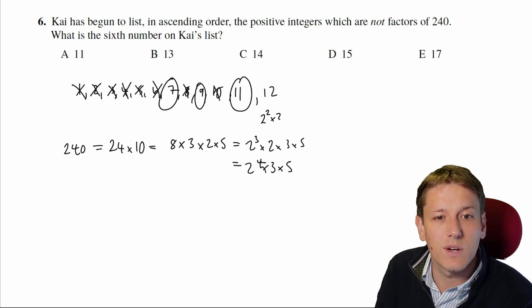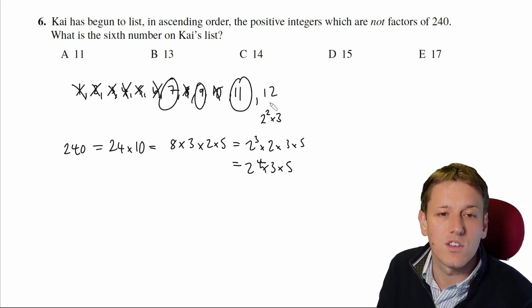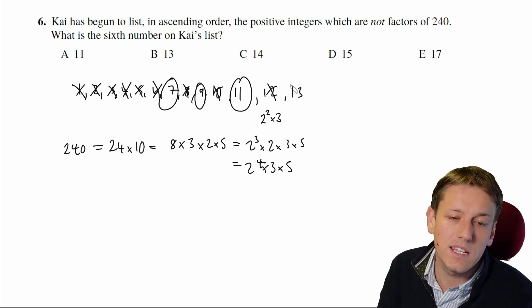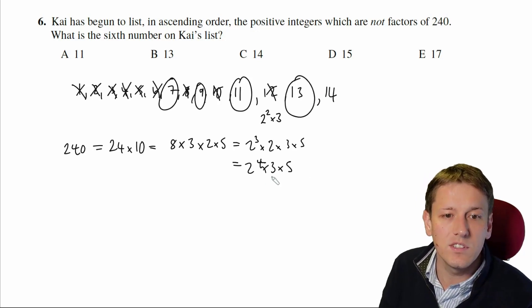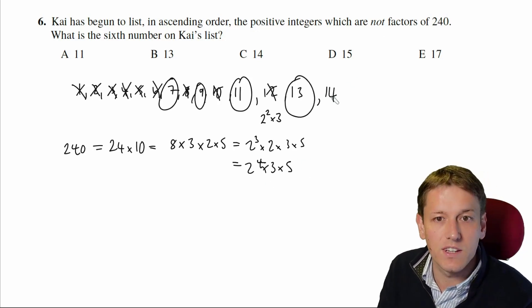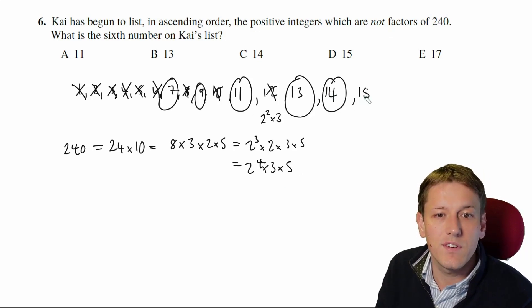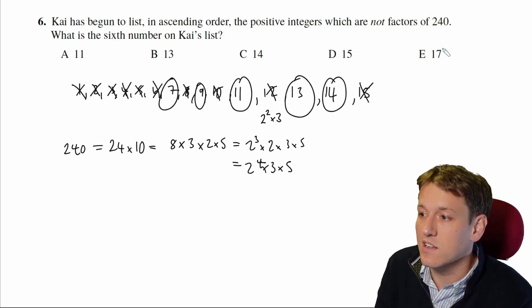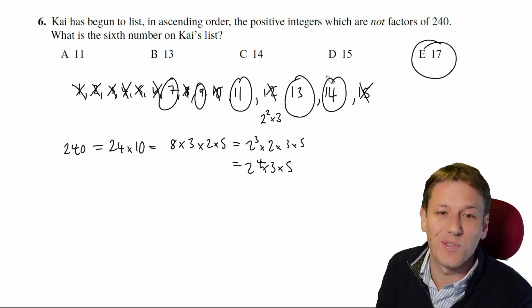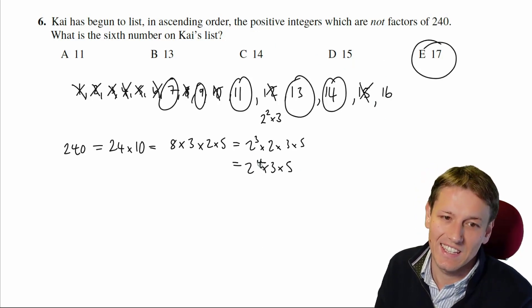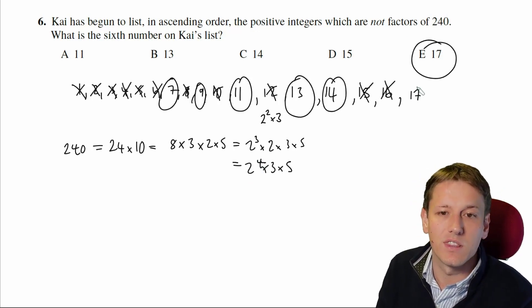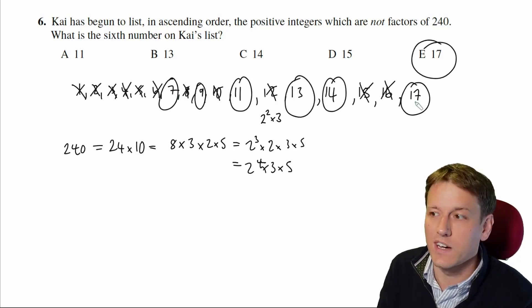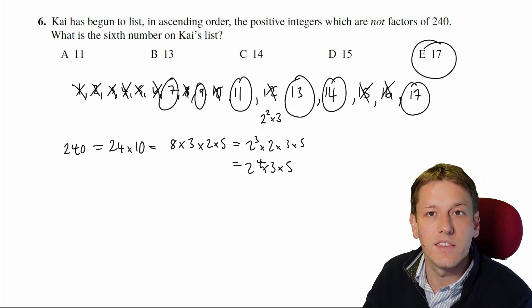12 is 2 squared times 3, and I've got a 2 squared and a 3, so that's a factor. 13 is a prime that's not in the factorization, so that's in the list. 14 is 2 times 7, well there's no 7 in the prime factorization, so it can't be a multiple of 14. 15 is 3 times 5, so that's a factor. At this point I can see the answer to the question is 17 because I've exhausted all of the options, but for completeness let's say 16 is 2 to the power of 4, so it's a multiple of 16, and 17 is a prime that's not in the factorization. So that's the 1, 2, 3, 4, 5, 6th number in Kai's list, and the answer is E.